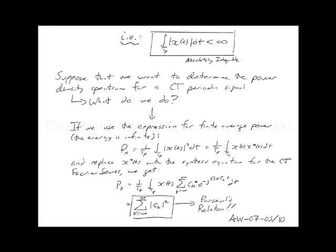The definition: P (power) equals 1 over the period times the integral of the magnitude squared of x(t) across that period. Remember the relationship of power to signal amplitude — it's a squared relationship. So magnitude squared of the signal, integrated across one period and normalized by the period, gives us the power of that signal.